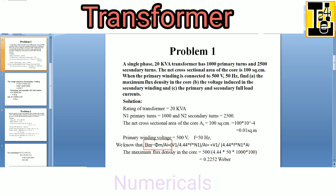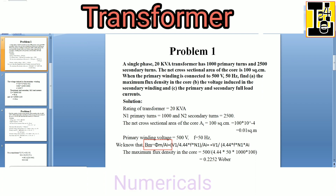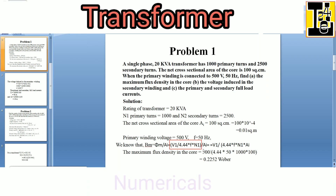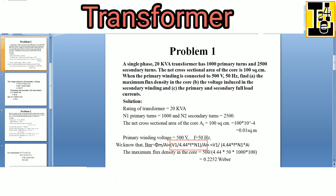Bm is equals to φm divided by AI, where φm is the maximum flux and AI is the net cross sectional area of the core. Using the EMF equation, φm is equals to V1 divided by 4.44 into f into N1. Substituting into the formula for Bm, we get V1 divided by 4.44 into f into N1 divided by AI.